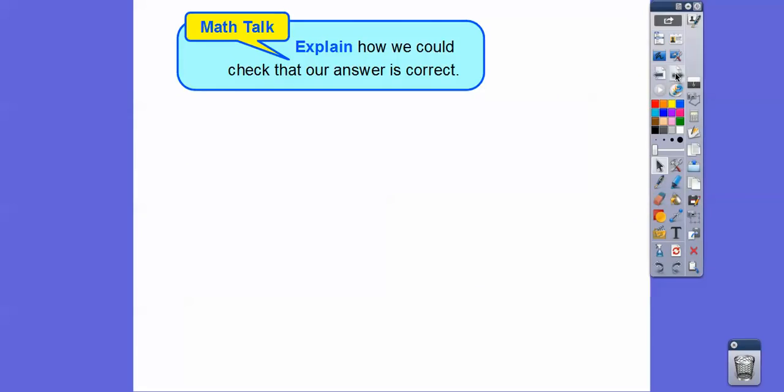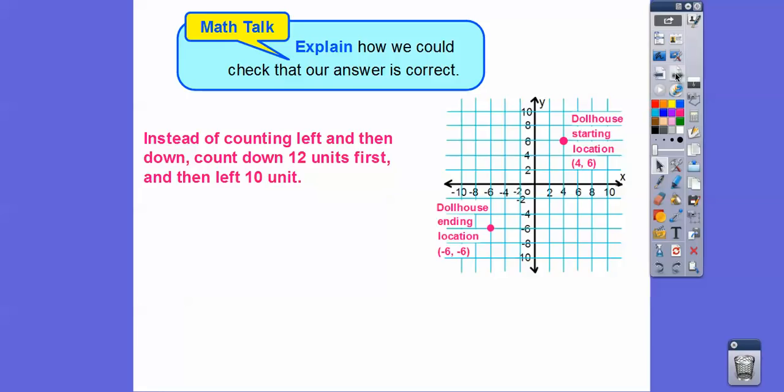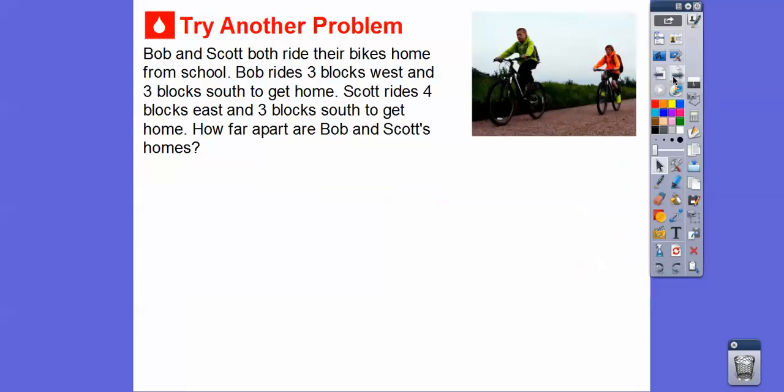Let's try another one. So explain how we can check that our answer is correct. Well, one way, instead of counting to the left and then going down, we can go down first and then to the left. So if we went down 12, that's going to be 6 squares. 1, 2, 3, 4, 5, 6. And then go to the left 10, which is 5 squares. That's going to take us to that same spot right there. So you can just go both ways on that.